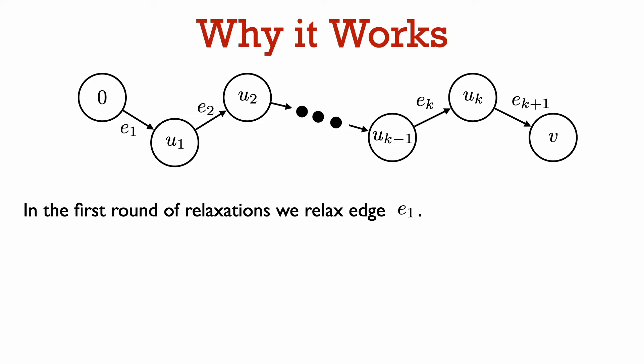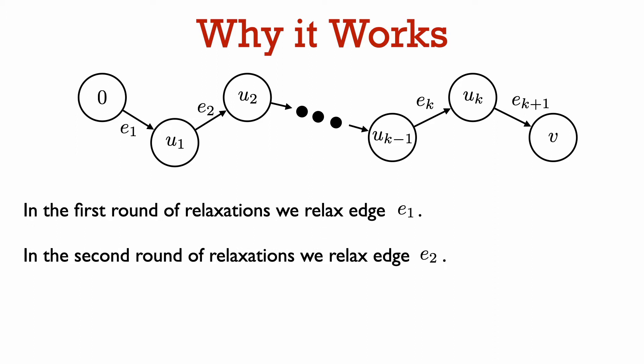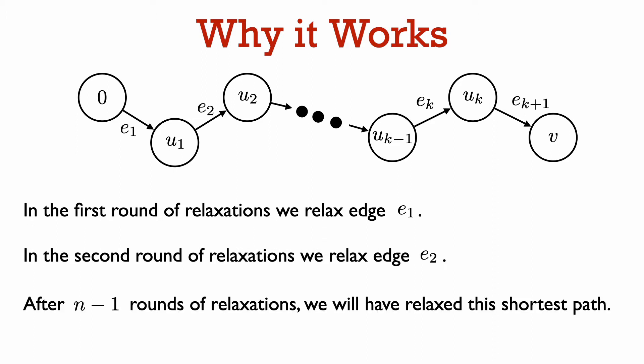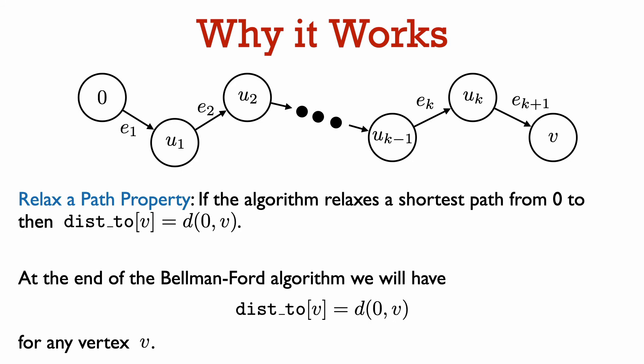In the first round of the Bellman-Ford algorithm, we know that we are going to relax edge e1, because we relax every edge in the graph. In the second round, we are going to relax edge e2. In the third round, we are going to relax edge e3, and so on. So after n minus 1 rounds of relaxations, we will have relaxed this shortest path. The relax a path property says that if we relax the edges of a shortest path from zero to v in order, no matter what other relaxations we do in between, then at the end of all these relaxations, we will have dist2 of v equal to the distance from vertex zero to vertex v.